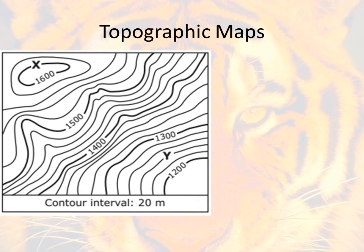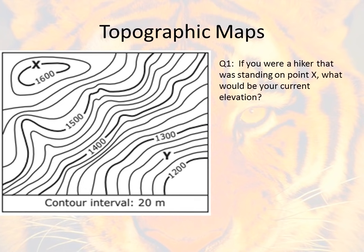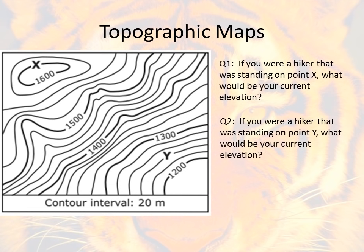Looking at sample questions for topographic maps — we're not making the map, just interpreting it. Question one: if you were a hiker standing on point X, what would be your current elevation? Grid in your answer and make sure you bubble in correctly. Question two: if you were a hiker standing on point Y, what would be your current elevation? On that one, you're going to have to use the contour interval to figure it out.